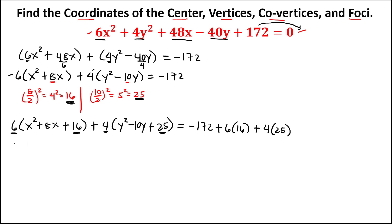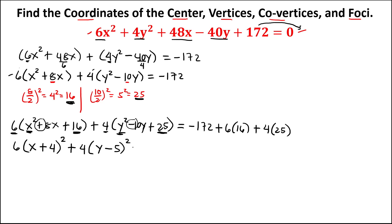Now apply quadratic factoring. For x: 6(x + 4)², since √16 = 4. For y: 4(y − 5)², since √25 = 5. On the right side: negative 172 + 96 + 100, and 6×16 = 96 and 4×25 = 100.